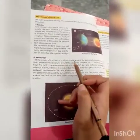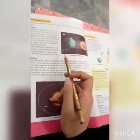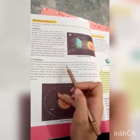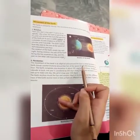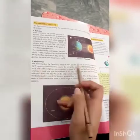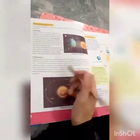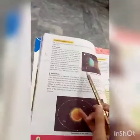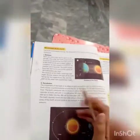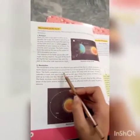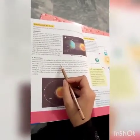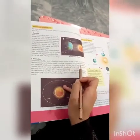The movement of the Earth in its elliptical orbit around the sun is called revolution. The Earth moves counterclockwise around the sun at a speed of 107,000 kilometers per hour. The Earth completes one revolution in about 365 days and six hours.